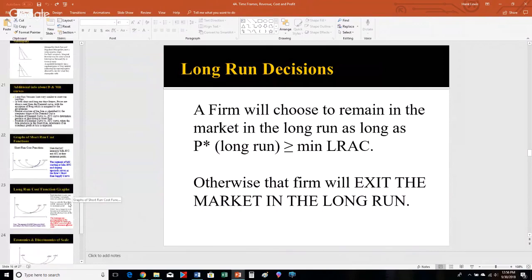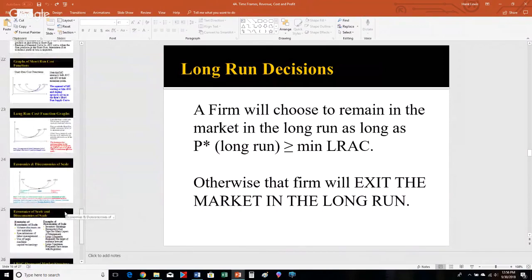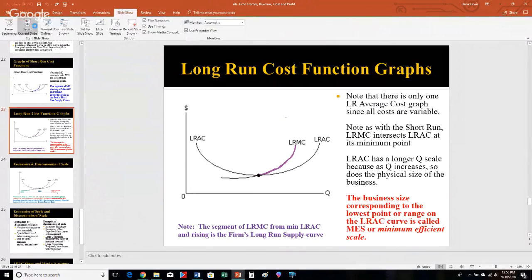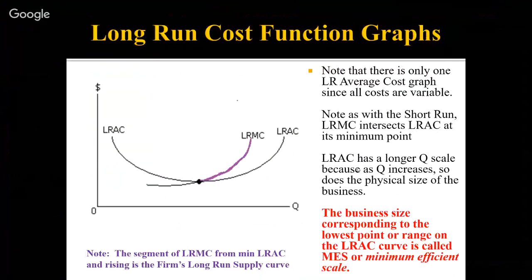I'm going to talk about long-run cost function graphs because this matters tremendously. In the long run, the long-run average total cost curve is a bowl-shaped curve. We also have the upward-sloping piece of the long-run marginal cost. The actual scale of the horizontal axis is a lot longer because as Q gets bigger, the firm's physical size is changing.